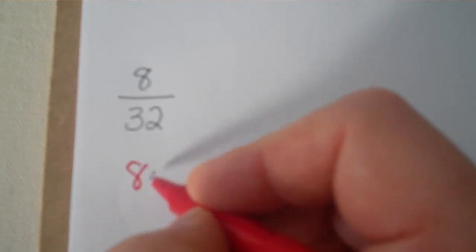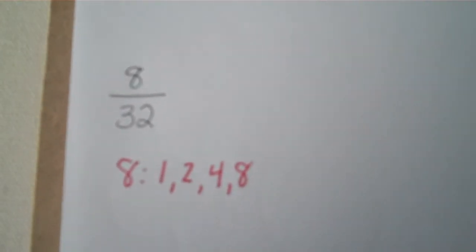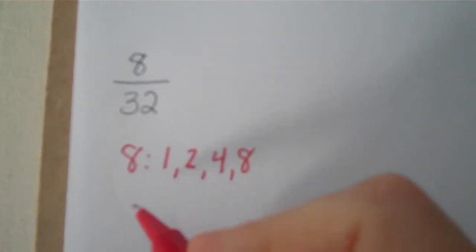Here's another example. 8 thirty-seconds. What are some factors of 8? 1, 2, 4, 8. What are the factors of 32?